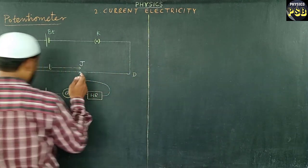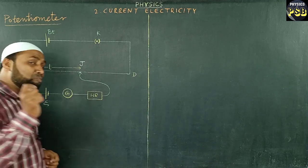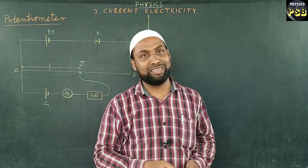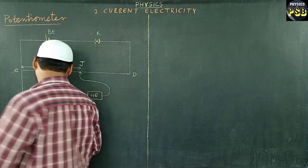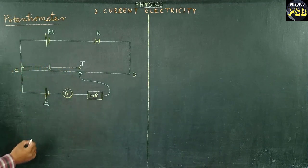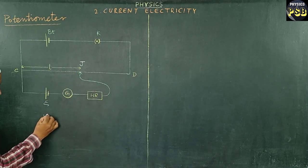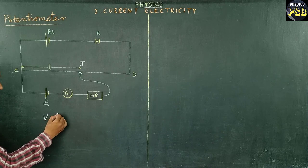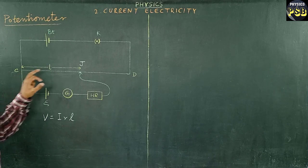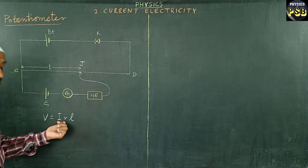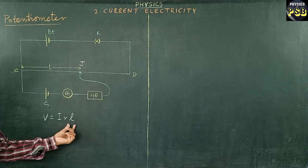At this point, the length of the wire is called the balancing length. We know that when two points are at the same potential, no current flows through that conductor. So the potential difference across CJ can be written as V equals I times r times L, where I is the current flowing through the potentiometer wire, r is the resistance per unit length of the wire, and L is the balancing length.